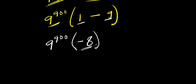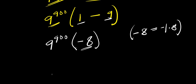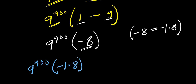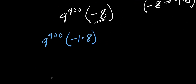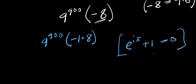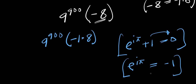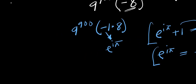From here I express negative 8 as negative 1 times 8. Now I consider Euler's identity: e^(iπ) + 1 = 0, which means e^(iπ) = negative 1. So negative 1 here equals e^(iπ). I substitute to get 9^900 times e^(iπ) times 8.